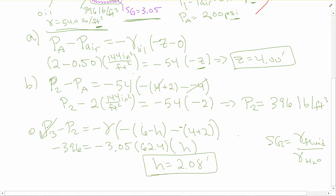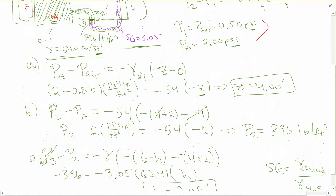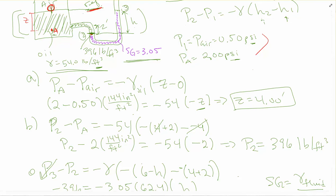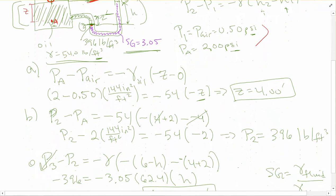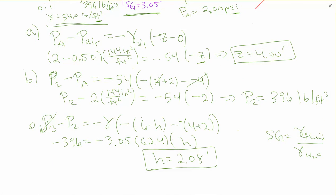So now we've found Z equals 4 feet and H equals 2.08 feet. The way we did the elevations using a consistent reference line might have been more involved than necessary — you could have changed your reference line to point 2 or elsewhere — but as long as you're consistent, it wouldn't matter. That's an example of a manometer problem.